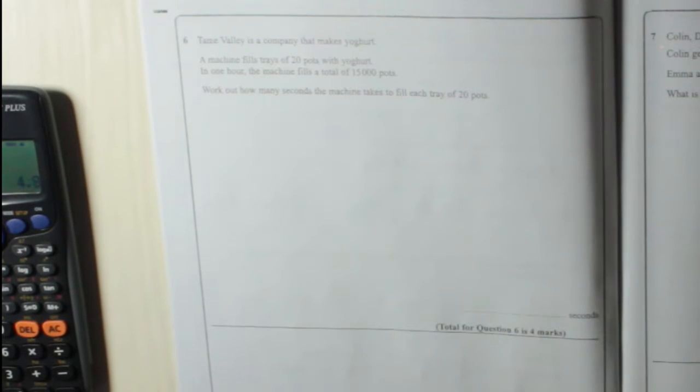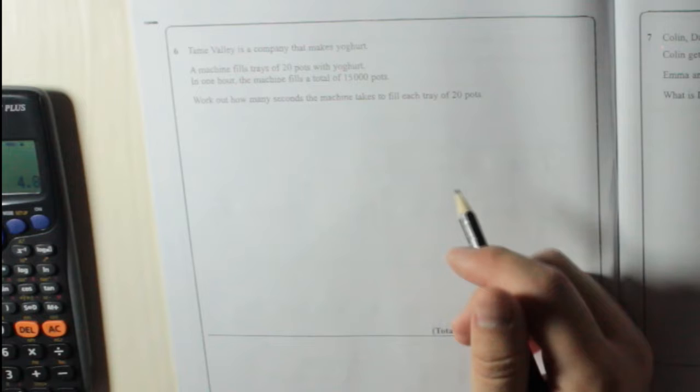Question 6. Tame Valley is a company that makes yoghurt. A machine fills trays of 20 pots with yoghurt. In one hour, the machine fills a total of 15,000 pots. Work out how many seconds the machine takes to fill each tray of 20 pots.